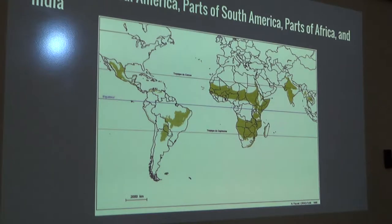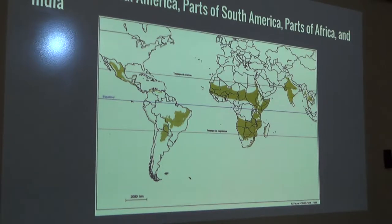For example, in southern Mexico there are mangrove forests and steep ridges, but in central India and Indochina there are mountain ranges.